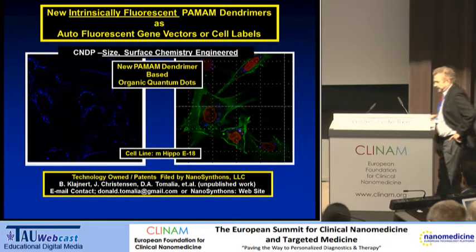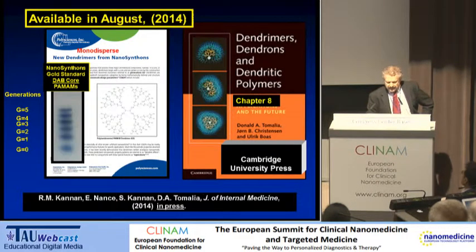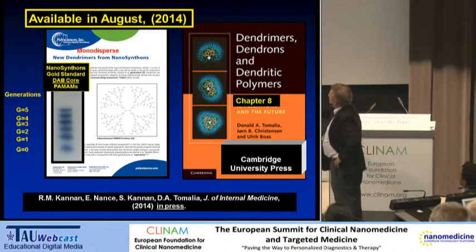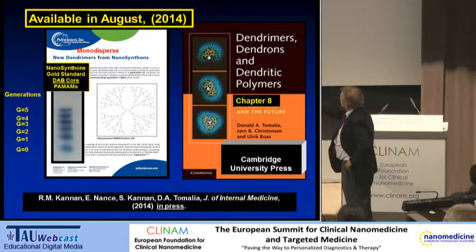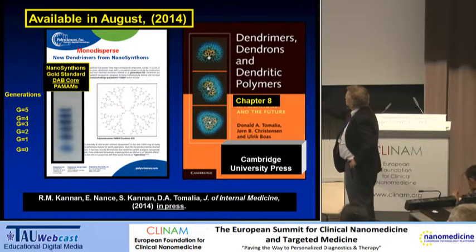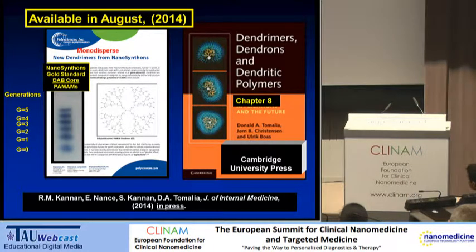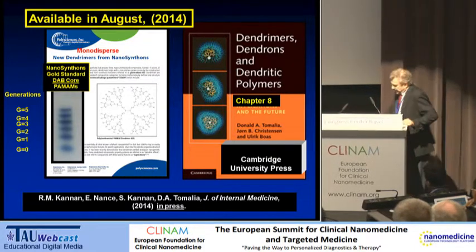We have no external or traditional fluorophore whatsoever — these are simply PAMAM-dendrimer structures that have been CNDP engineered to give these beautiful glowing spots with low toxicity compared to the cadmium-based or inorganic quantum dots we're so used to hearing about. This is, in my opinion, one of the first examples of these kinds of materials. Finally, we have used CNDP engineering to carefully produce new monodispersed dendrimers that will be the gold standard for the PAMAM-dendrimer area, with electropherograms of generations 0 through 5 shown here.